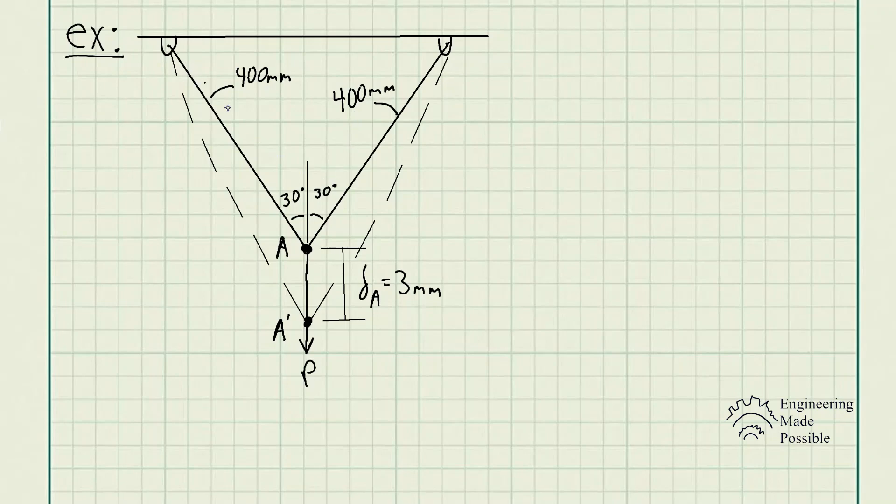For this problem we have two wires hanging and attached at point A, and each has a length of 400 millimeters. The problem statement is: if the force P causes point A to be displaced vertically 3 millimeters, determine the normal strain in each of the wires.